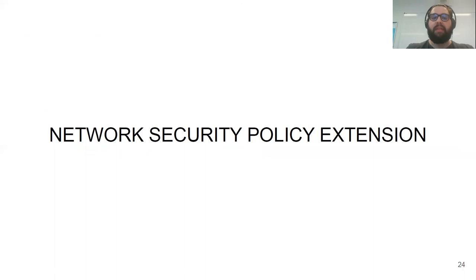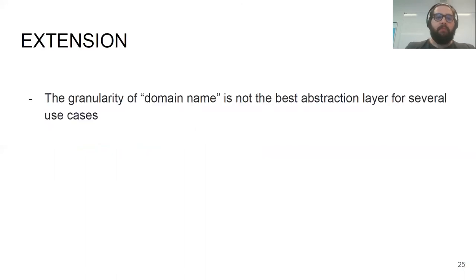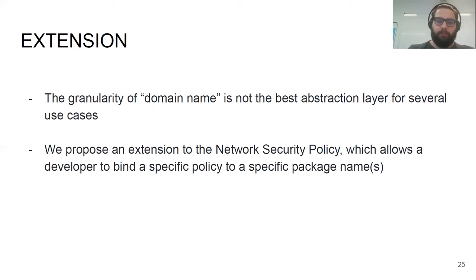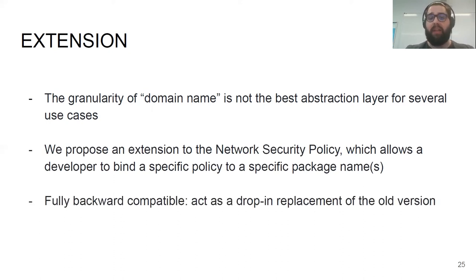This means the only available option for the developer is to configure a very open and potentially weak policy where it is not possible to forbid HTTP by default. To overcome this issue, as a last contribution of this paper, we present an extension of the network security policy. We argue that the granularity of domain name is not the best abstraction layer for several use cases — advertisement libraries being one of them. Our new proposal is an extension that is fully backward compatible and can act as a drop-in replacement for the old version of the network security policy.